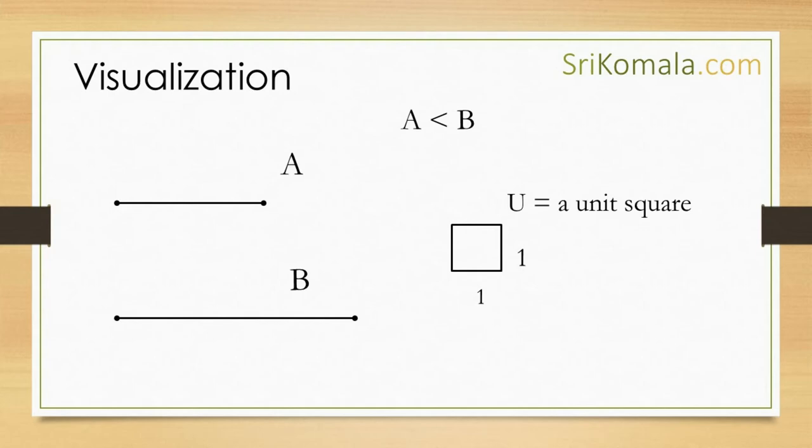Then in this proof, to make a better visualization, we are going to use a unit square. A unit square is a square whose sides have length of 1 as shown in this diagram. Here, let us call a unit square as U.